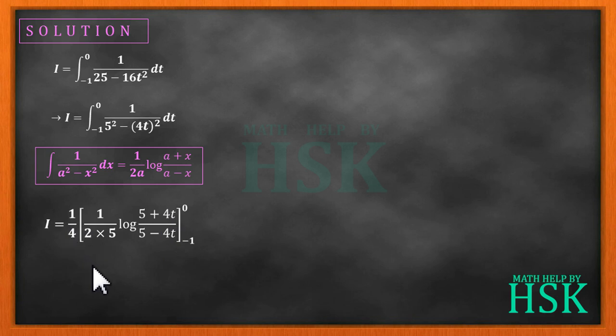Further we can write the value of I is 1 by 40 times log of 5 plus 4 into 0 upon 5 minus 4 into 0, minus log of 5 plus 4 into minus 1 upon 5 minus 4 into minus 1.